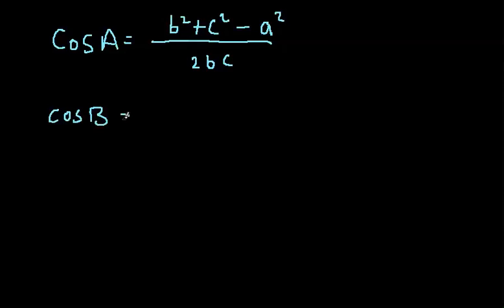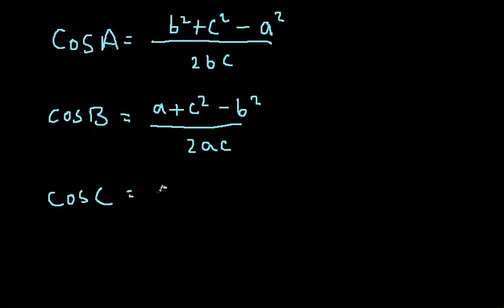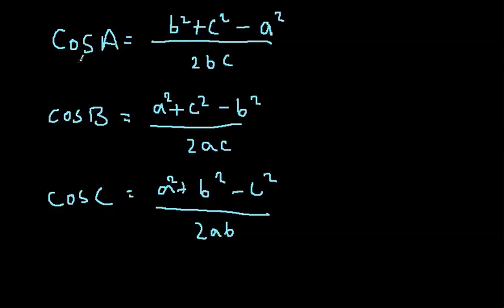So, cos B = (a² + c² - b²) / 2ac. And, cos C = (a² + b² - c²) / 2ab. Okay? So, this is the cosine rule to work out the angle.